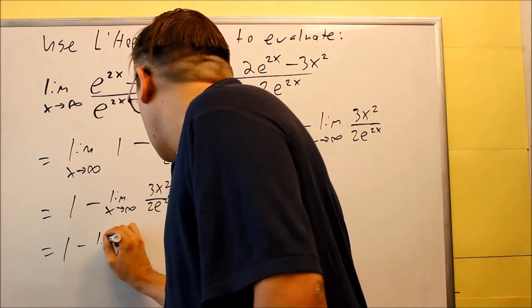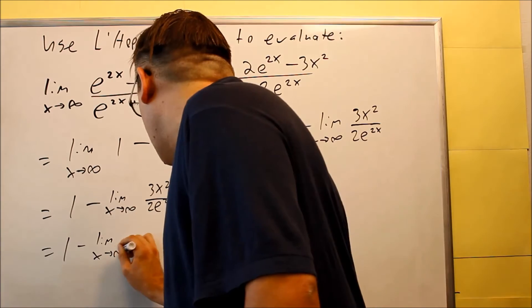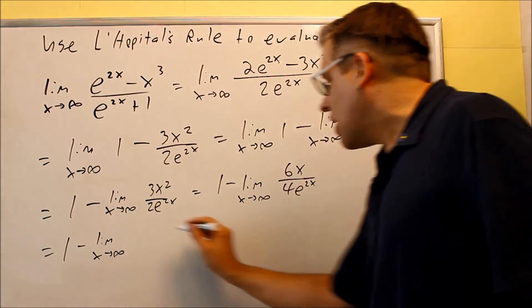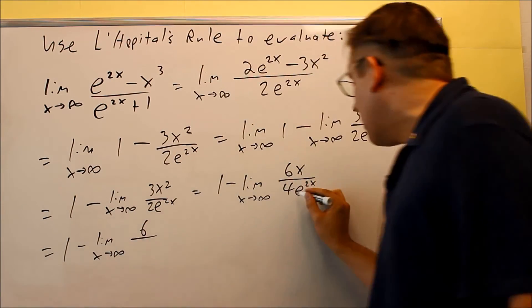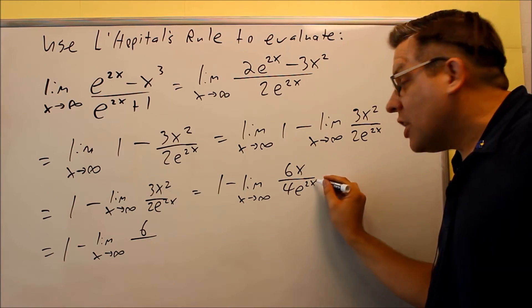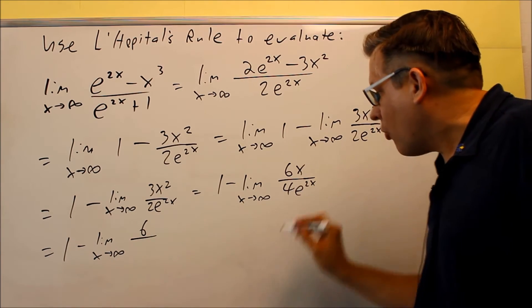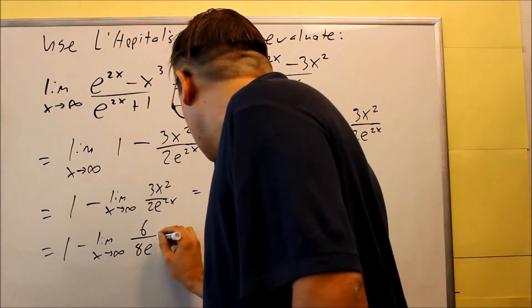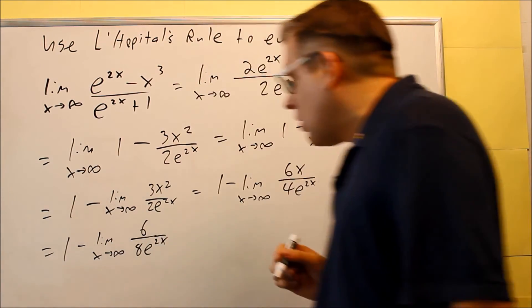So we get 1 minus limit x goes to infinity. The derivative of 6x is 6. On the bottom I have e to the 2x, which is 2e to the 2x, that derivative, times the 4 and 8 out front.